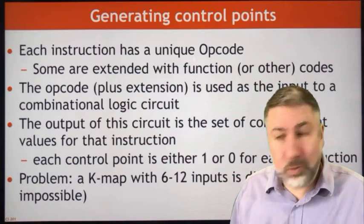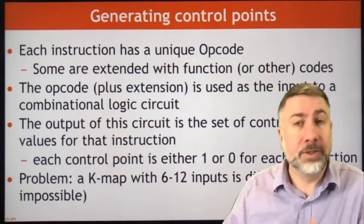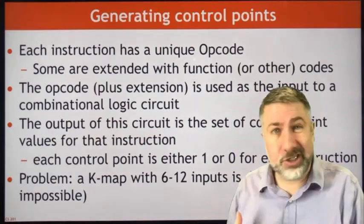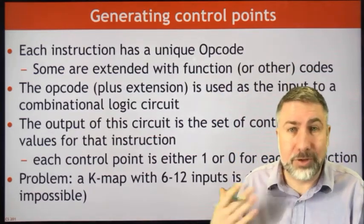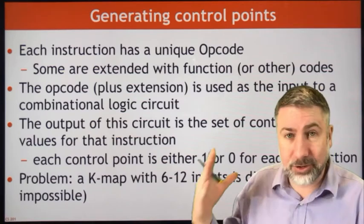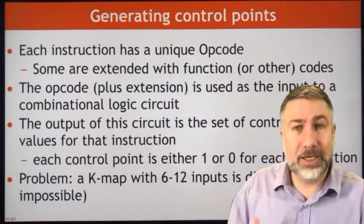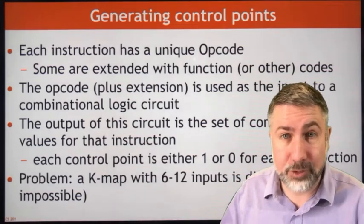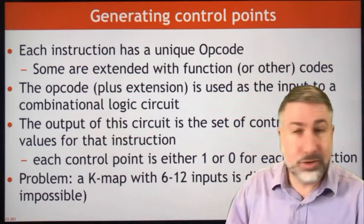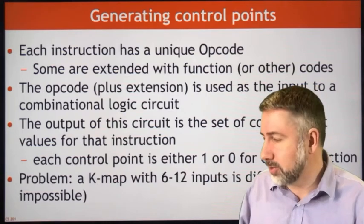The question now is how we go from the opcodes of the instruction to these control point values. Every instruction has an opcode that determines what instruction is used and what the rest of the hardware does. Sometimes the instruction is extended with a function code — this only happens when the opcode is zero, but you could add more instructions with different function code extensions.